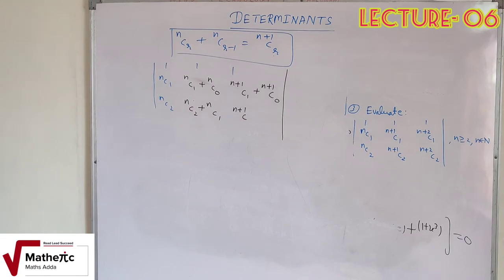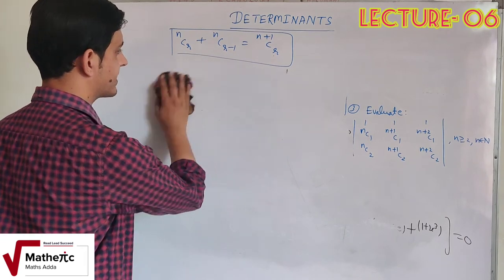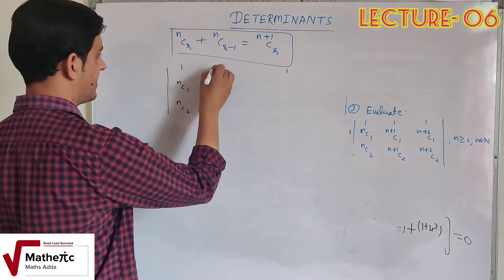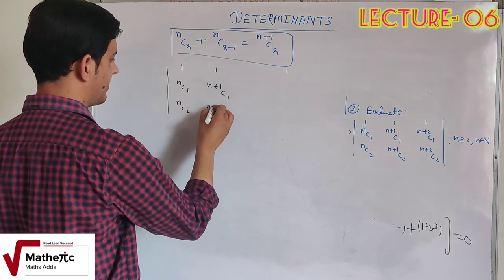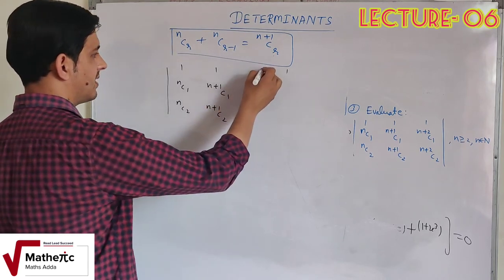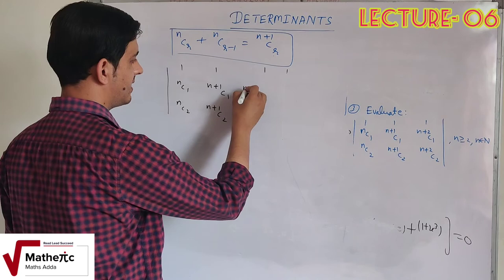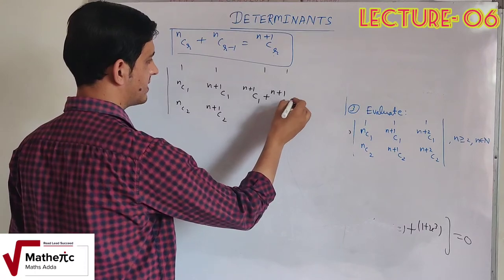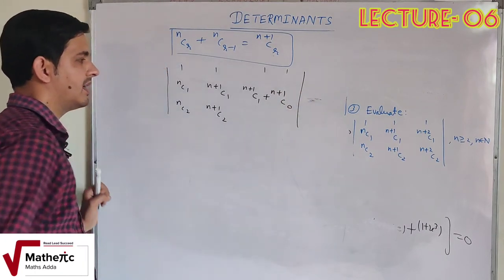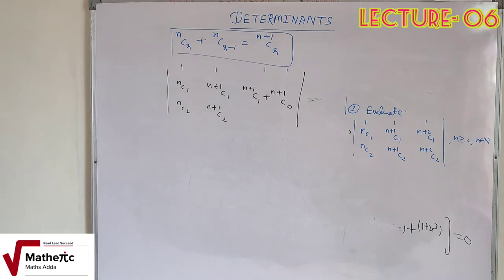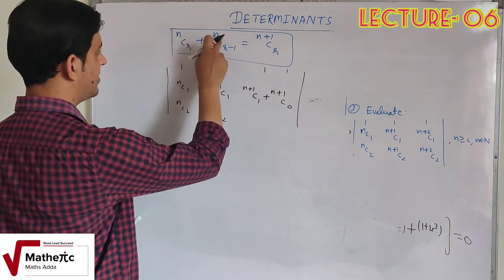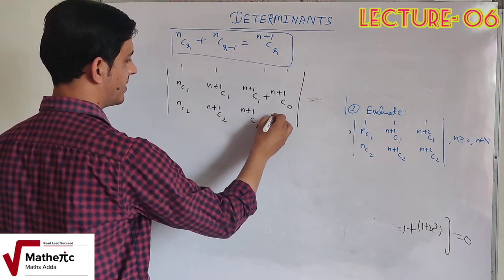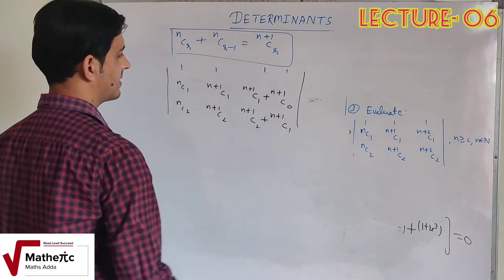Matrix में formula apply करने के बाद: R2 की entries बनती हैं [1, nC1+nC0, nC2+nC1] और R3 की entries बनती हैं [1, n+1C1+nC1... n+2C2 = n+1C2+n+1C1]. C3 = C3 − C2 apply करते हैं: column subtraction से entries simplify होती हैं और कई terms cancel होते हैं।